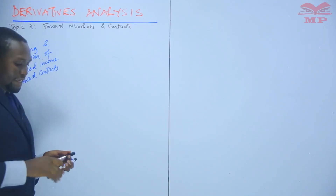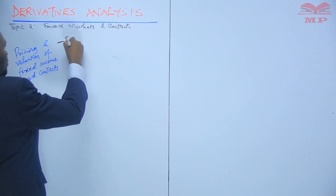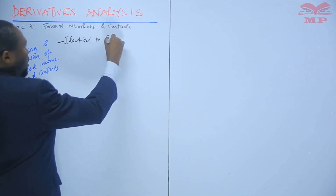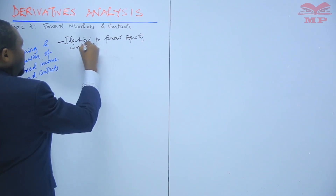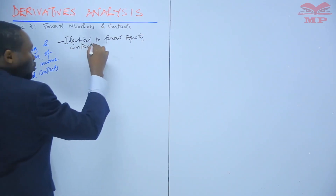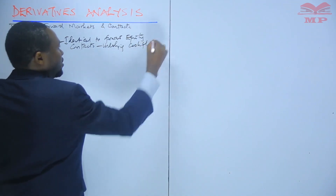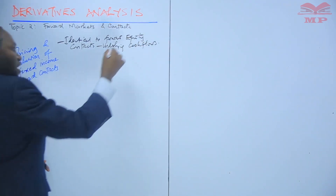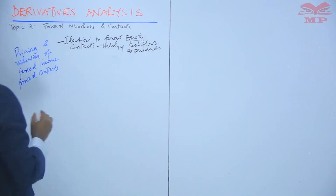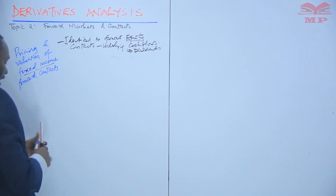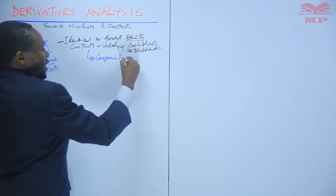The pricing and valuation of fixed income contracts is similar, indeed identical, to forward equity contracts. In that, we must take into consideration the underlying cash flows. In an equity forward contract, the underlying cash flows were dividends. Now, in fixed income instruments, our underlying cash flows will be the coupons, which are related to the interest.